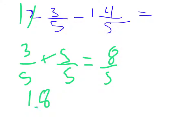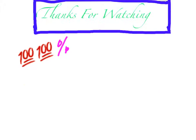So 1 and 8 fifths minus 1 and 4 fifths. 1 minus 1 equals 0, so it will equal 4 fifths. 4 fifths is the answer. Thanks for watching, and I hope you understand. Bye!